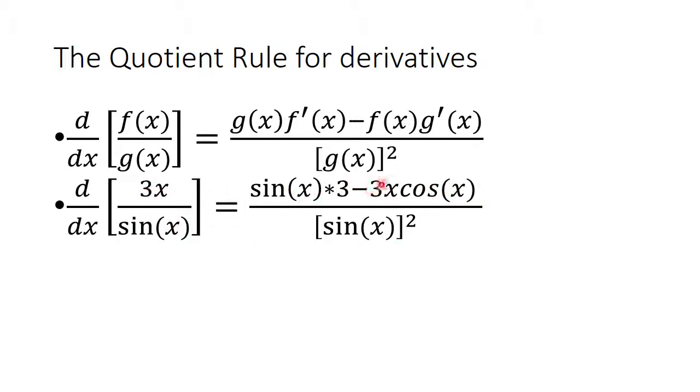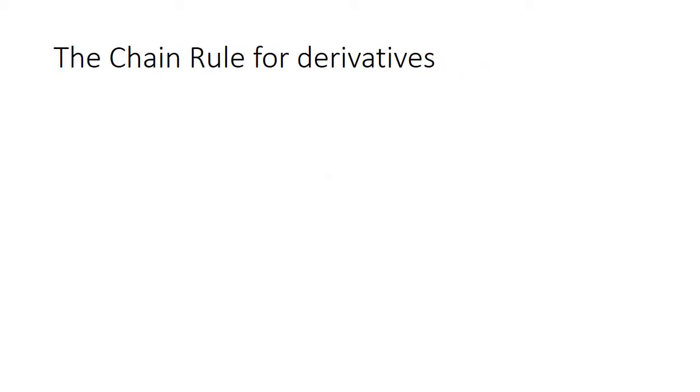minus, and now you took the derivative of the bottom, which will give you the cosine x, times this one, which you don't take the derivative of. In this case, that will be your f of x. And then you take the denominator squared. Okay? Let's get it done a couple times.